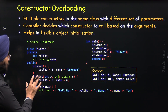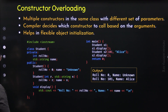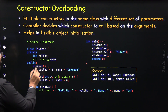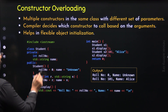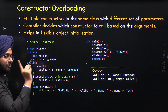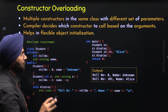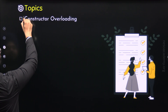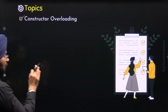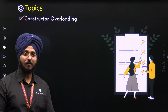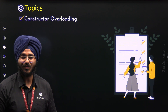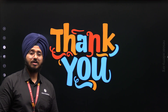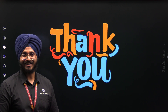So through this program, we can understand that it is possible to overload constructors — that is, we can define multiple constructors with different sets of parameters. With this, we have understood constructor overloading, and this means we are done with this lecture as well. Thank you for watching this lecture. I will see you in the next one.